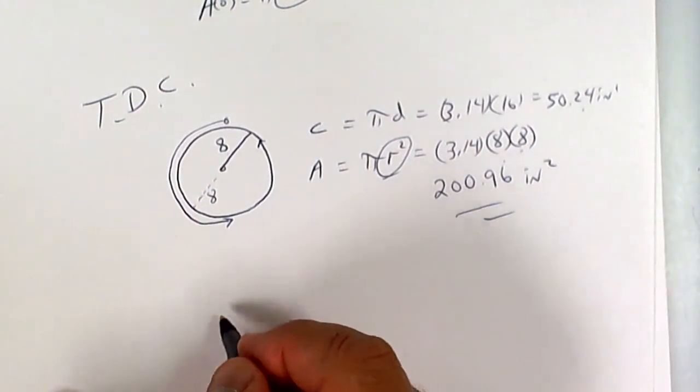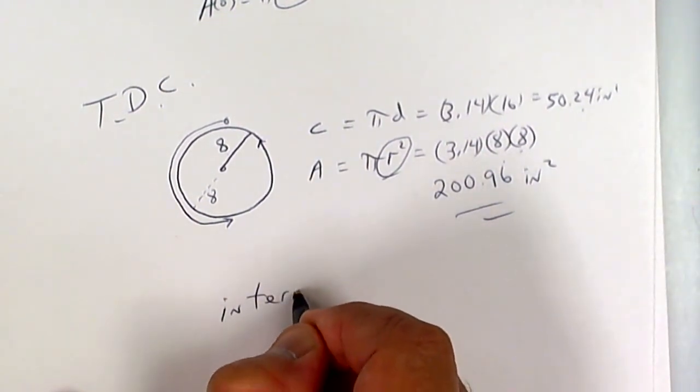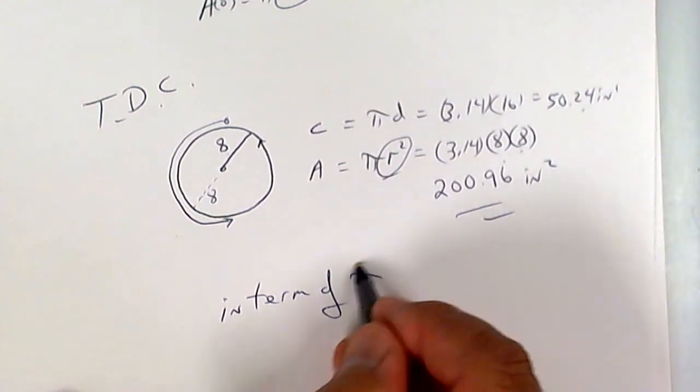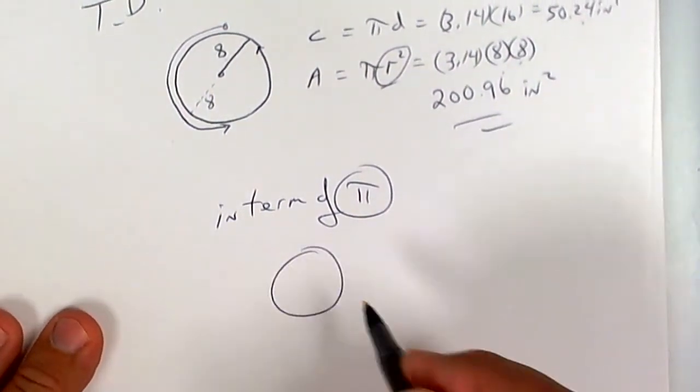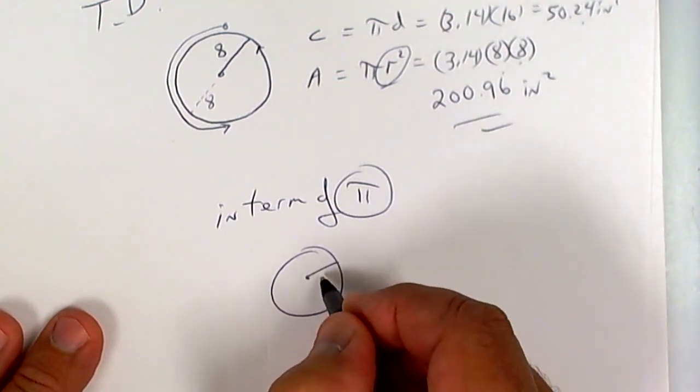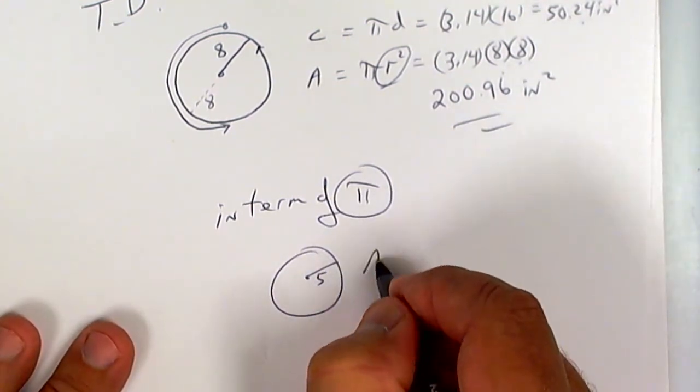There is one other thing: if they tell you to leave it in terms of pi. Put this down: in terms of pi. That means they don't want you to use 3.14.